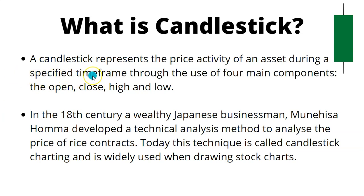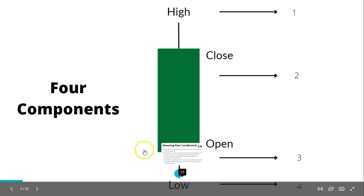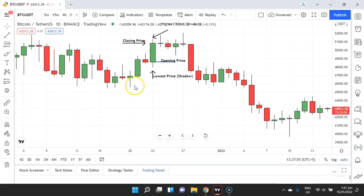I'll explain the specified time frame concept when we move to TradingView. These are the four major components of a candlestick: the opening price, the closing price, the highest price, and the lowest price of a specified time frame. Let's discuss these candlestick components on TradingView.